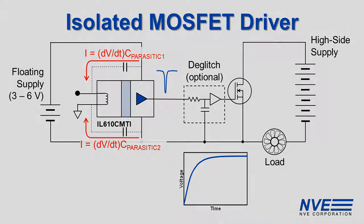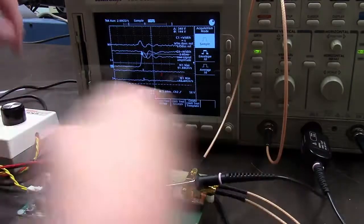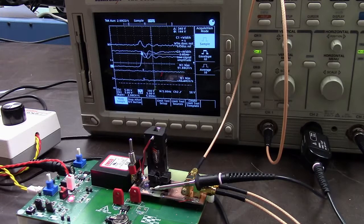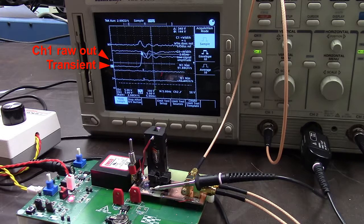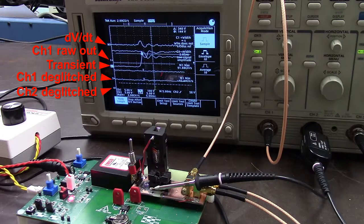Let's go into the lab to see. We're testing an IL-611 CMTI-1E, which is a two-channel MSOP isolator. In addition to best-in-class CMTI, it's the world's smallest isolator. The test setup generates 10 transients per second. Trace 1 is the isolator channel 1 output. Trace 2 is the common mode voltage. M1 is the oscilloscope calculated rate of change, or dV/dt. And traces 3 and 4 are isolator outputs with 10 ns d-glitch.